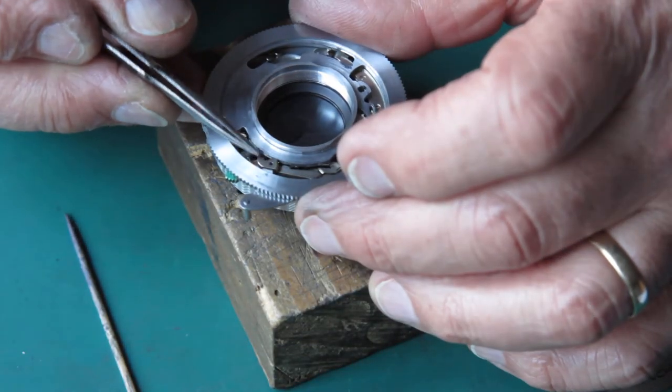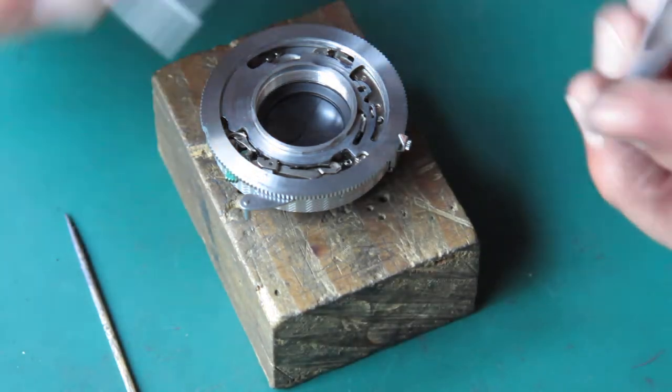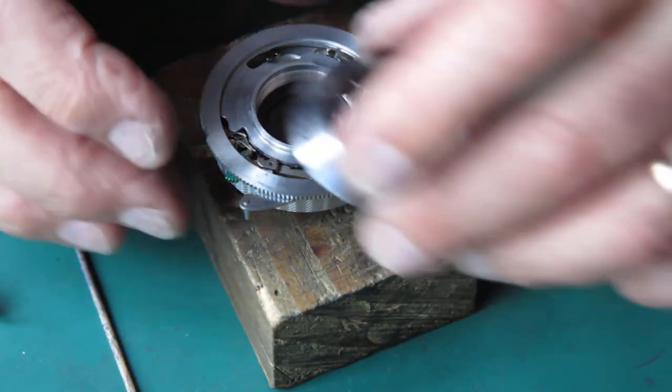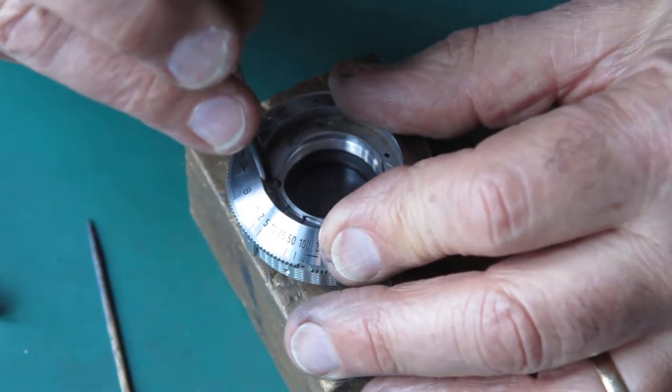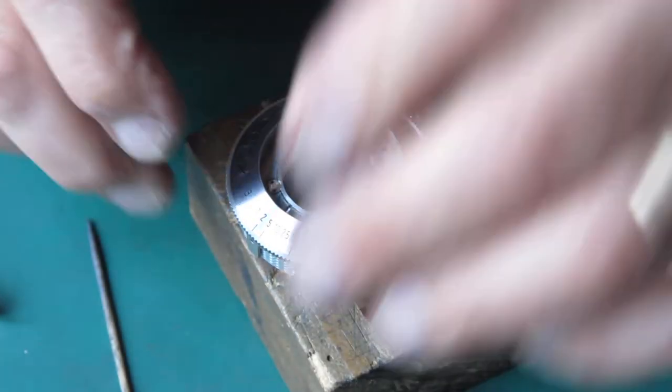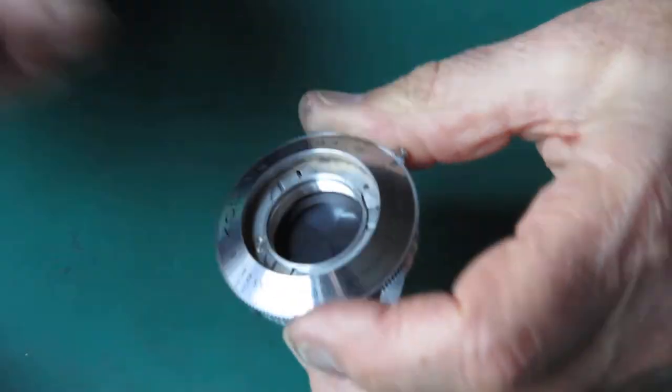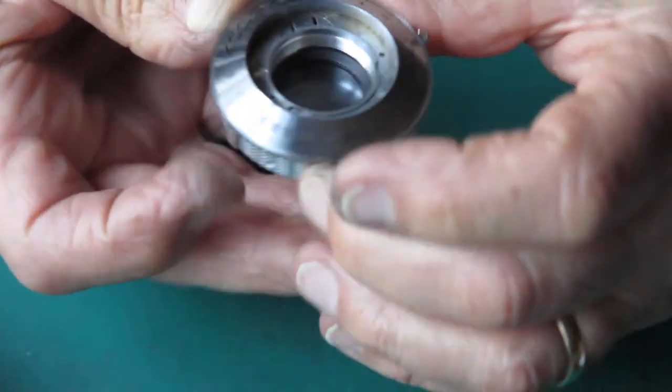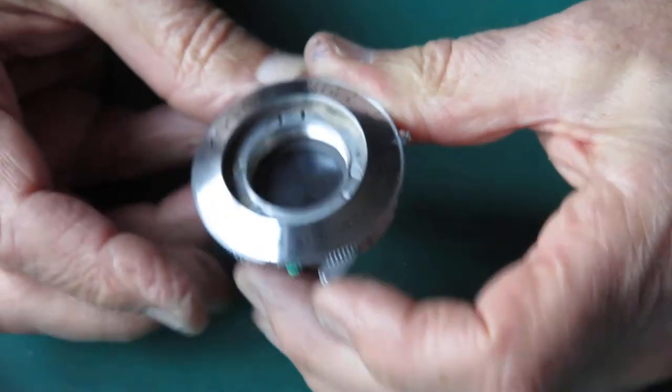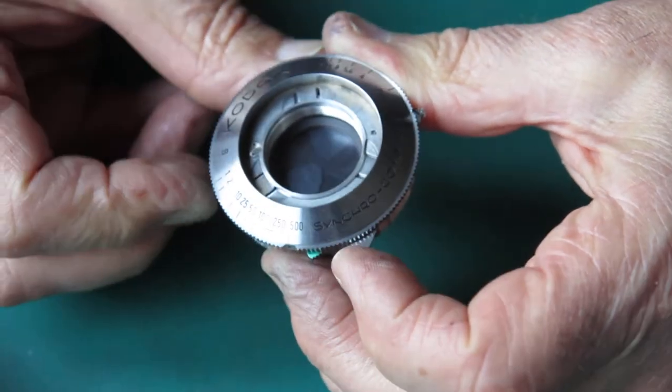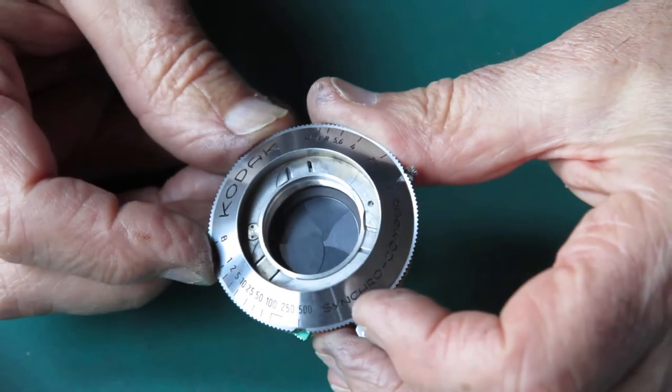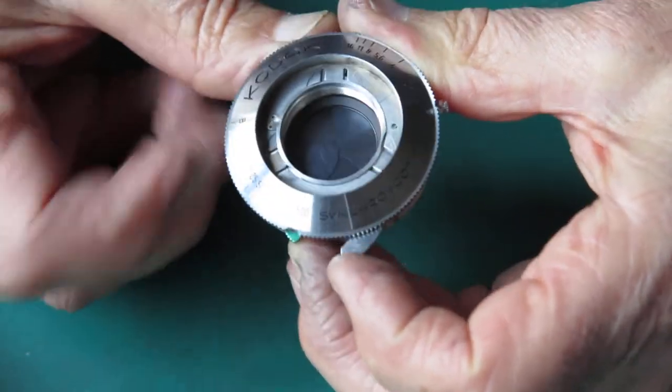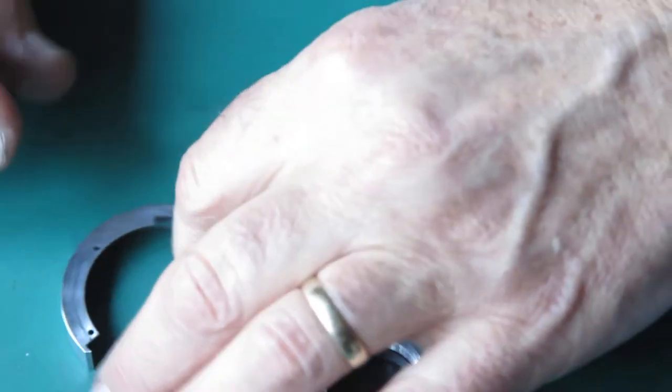Some fault you can get is if this B lever is sitting too high or is bent upwards, it can catch on this plate here. I don't think we've got that problem. 500th of a second on X. Good, no hesitation. 500th of a second on M. No hesitation. That all looks very good. I'm going to fit the outer case back to the shutter.